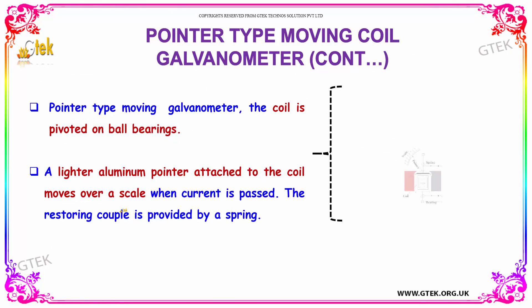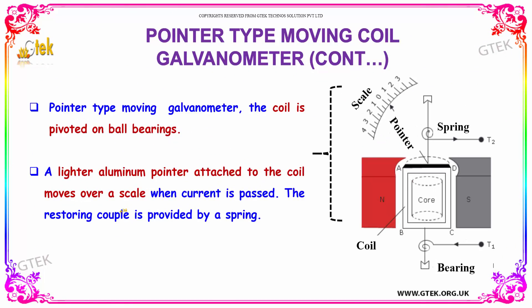The pointer type moving coil galvanometer has a coil which is pivoted on ball bearings. A lighter aluminum pointer attached to the coil moves around over a scale when current is passed. The restoring couple is provided by a spring.